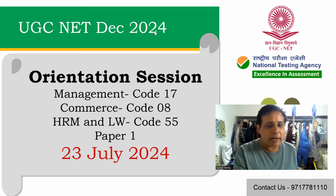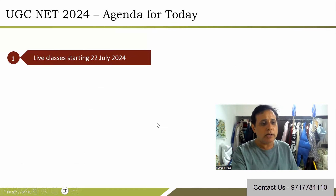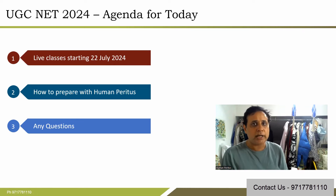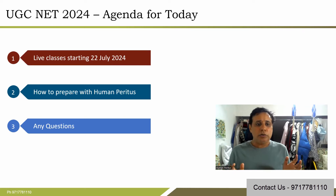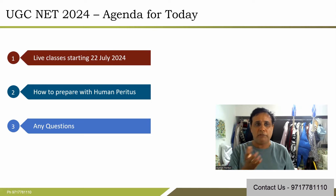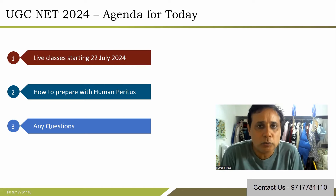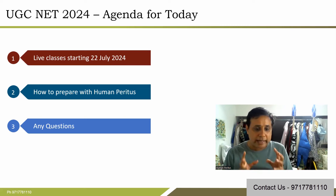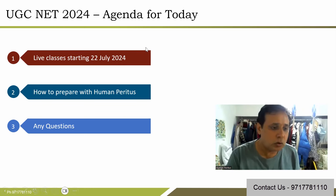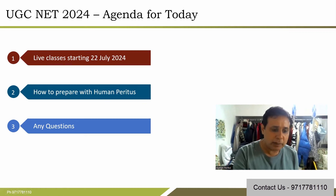You can see my screen now. So we'll cover three things: number one, an orientation on our plan since live classes started yesterday. Number two, I'll take you through the entire journey of how you can clear UGC NET — JRF or Category 1, 2, or 3 — in the December exam. Third, we'll take your questions in this live session.